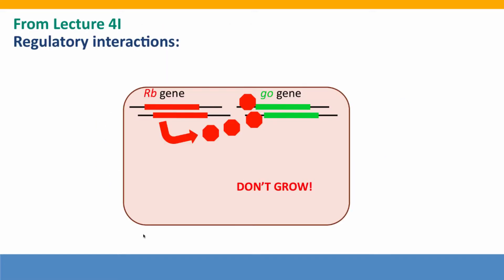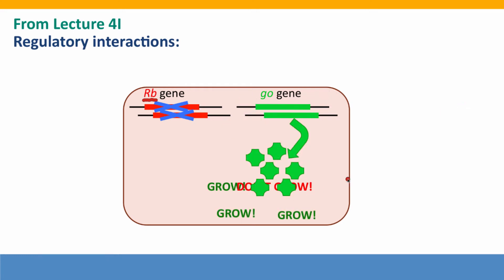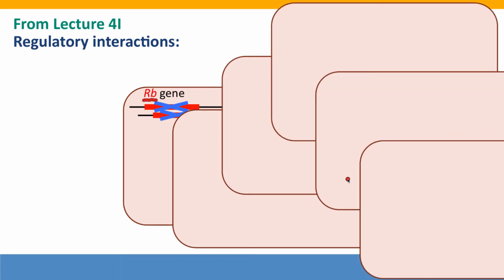Here's that same situation from the perspective of the regulatory interactions diagrams used in Module 4. I've renamed what we were calling the STOP gene — I've named it the RB gene. Early in retinal development, the RB gene is inactive and the cells are able to divide. But late in retinal development, the RB gene becomes active and it shuts down the genes that allow cell division — it effectively says don't grow. If there's a single mutation in one allele of RB knocking it out, it doesn't matter; the cell still won't grow. But if both alleles are knocked out, then the RB function is lost and the cell is able to grow, carrying out unregulated growth causing tumor formation.